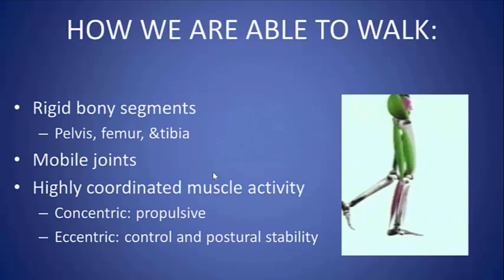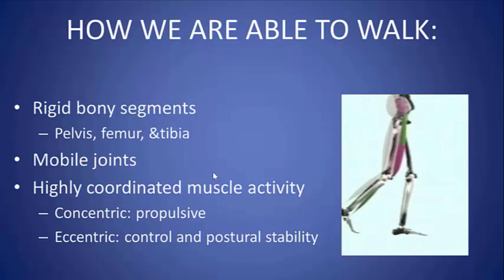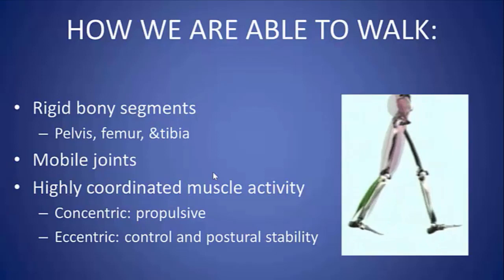So that's the gait cycle. We have these rigid bony segments — the pelvis, femur, tibia, and the foot — which are connected by mobile joints: the hip joint, the knee joint, the ankle joint, and to some extent the subtalar joint.